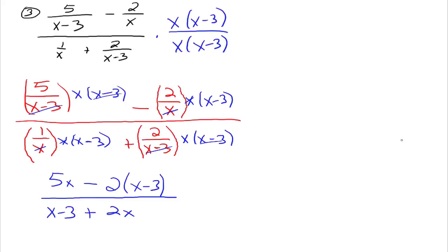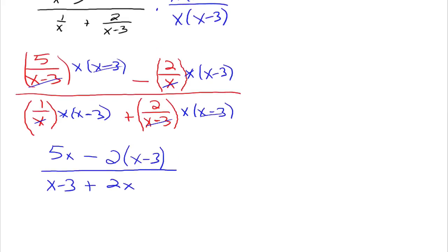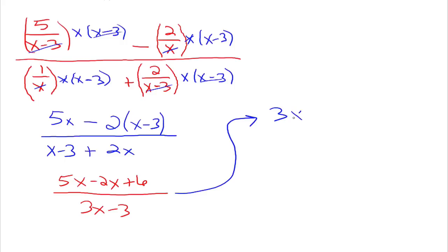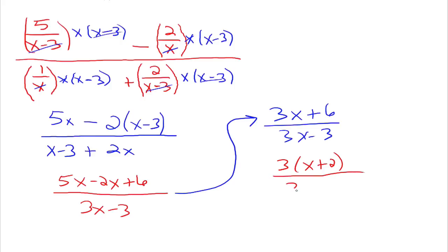Now it looks more familiar. Simplify up the numerator and denominator individually: we have 5x minus 2 times x minus 3, which gives 5x minus 2x plus 6 — that's why I wanted you to wait before distributing the 2, because it's really a negative 2 and it's easy to miss the plus 6. The denominator goes to 3x minus 3. So we have 3x plus 6 over 3x minus 3. Factor: 3 times x plus 2 over 3 times x minus 1. The 3's divide out, leaving x plus 2 over x minus 1.